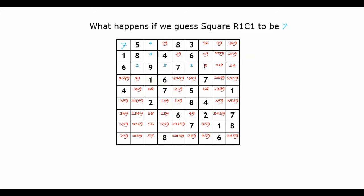Now let's look at the finalized square to be 8. We remove 8 from its row, from its column, and from its box.